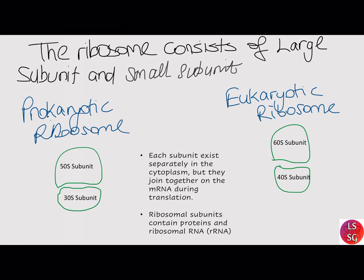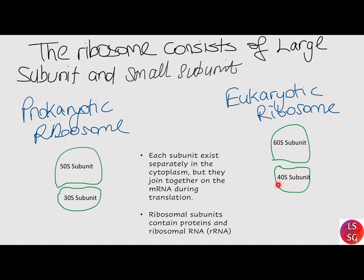A ribosome consists of a large subunit and a small subunit. The subunits are referred to in terms of their sedimentation rate, measured in Svedberg units. Prokaryotic ribosomes have a small 30S subunit and a large 50S subunit, while eukaryotic ribosomes have a small 40S subunit and a large 60S subunit.